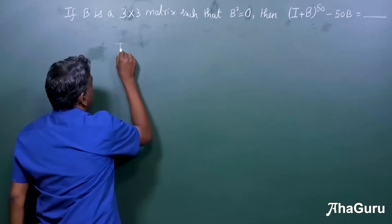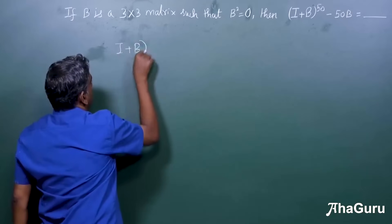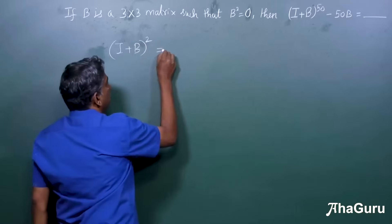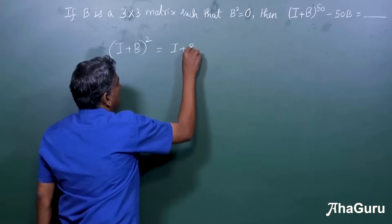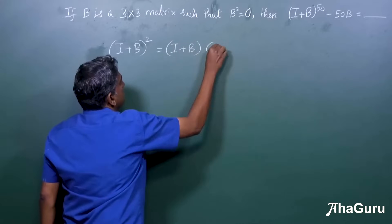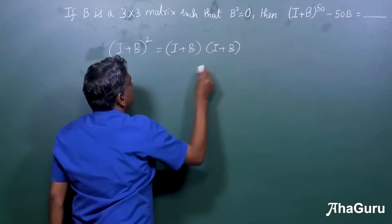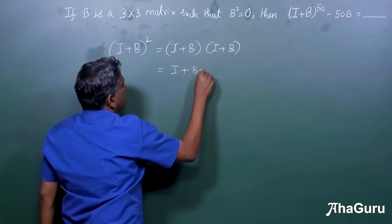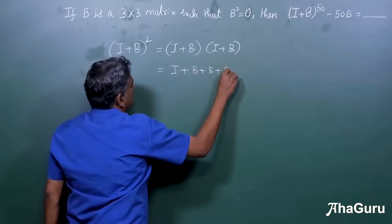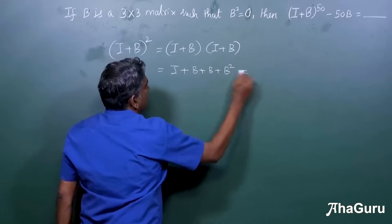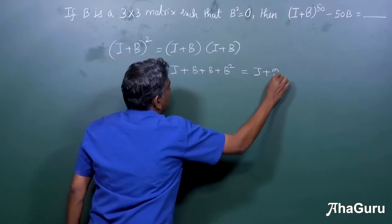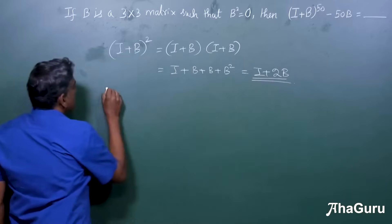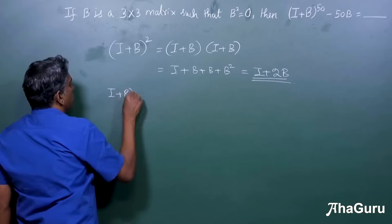Let's first try and find (I + B) squared — forget 50, let's find (I + B) whole square. This is (I + B) times (I + B), so this will be I plus B plus B plus B squared. But B squared is null, so this is just I plus 2B. Similarly, (I + B) cubed...